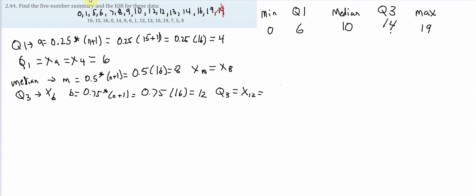So, the minimum is still 0. It's still the smallest number. 19 is still the largest number.